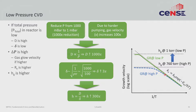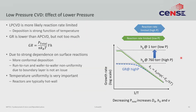In the reaction rate limited regime, growth rate depends on total pressure — which fell 1000x — but also on H, which increased 300x. So overall, growth rate reduced only 3x. Even though pressure fell 1000 times, growth rate changed by only a factor of 3 — not nearly as drastic a reduction as one might expect compared to AP-CVD. You do have lower growth rates, but not orders of magnitude lower.